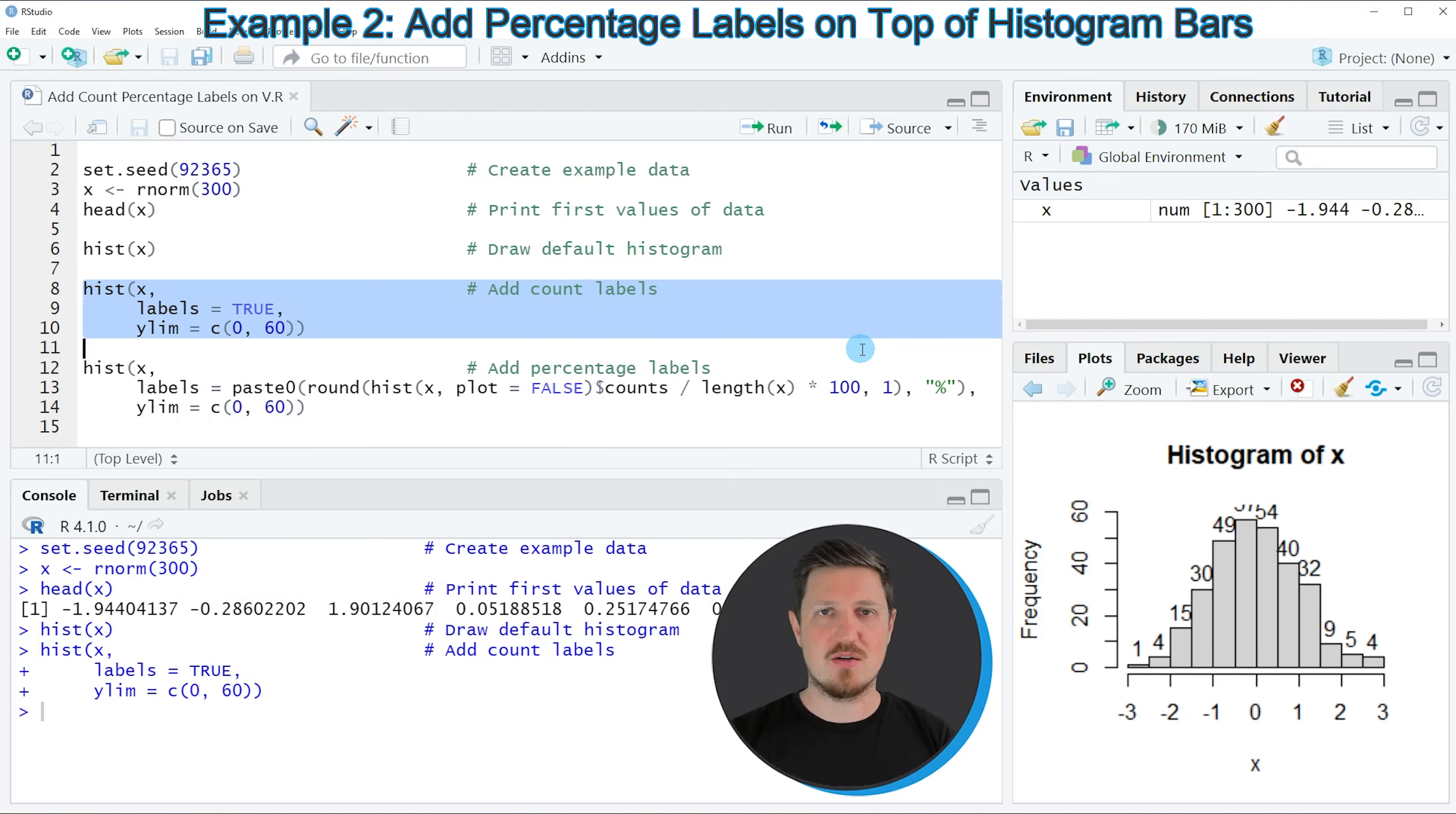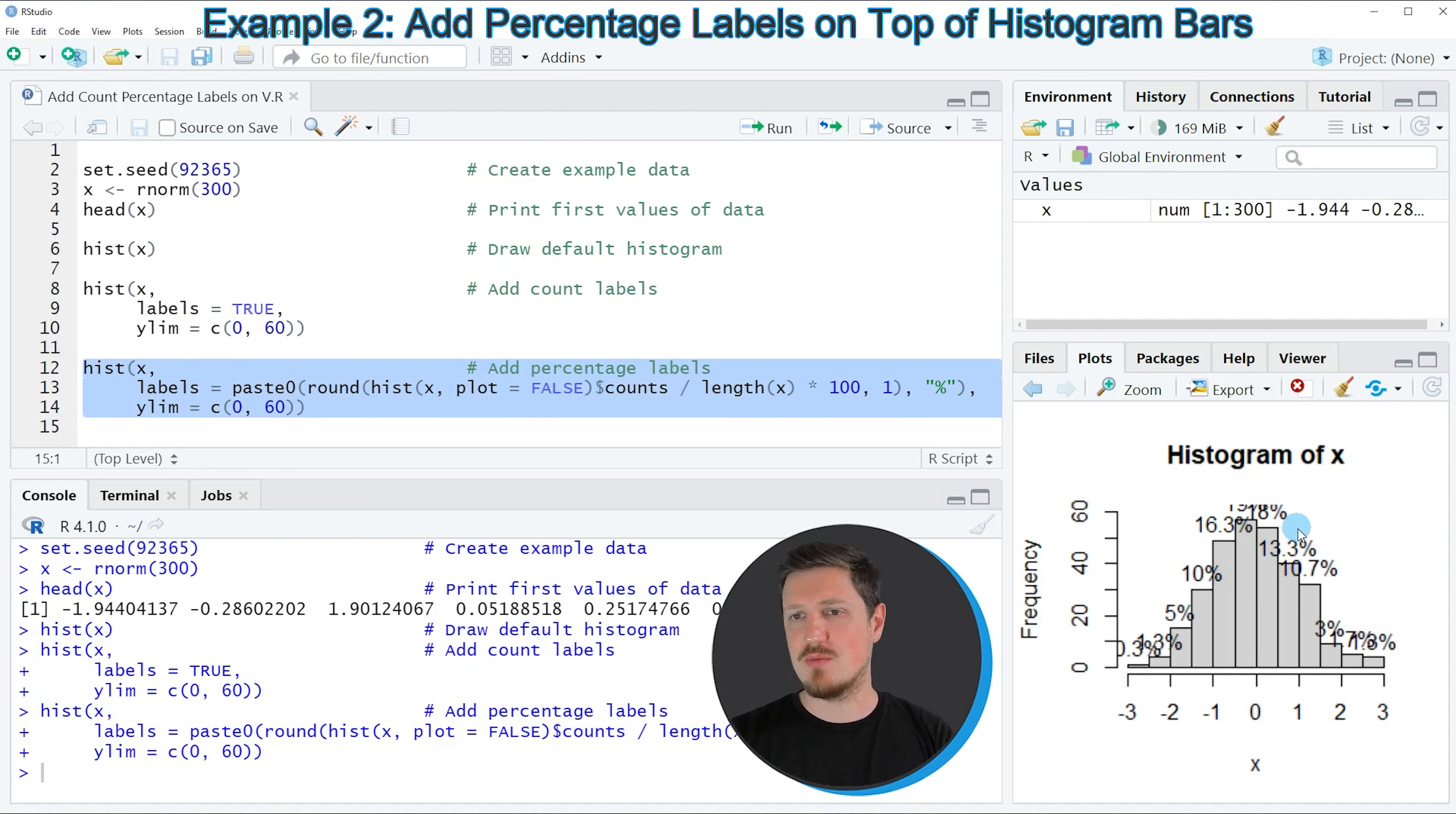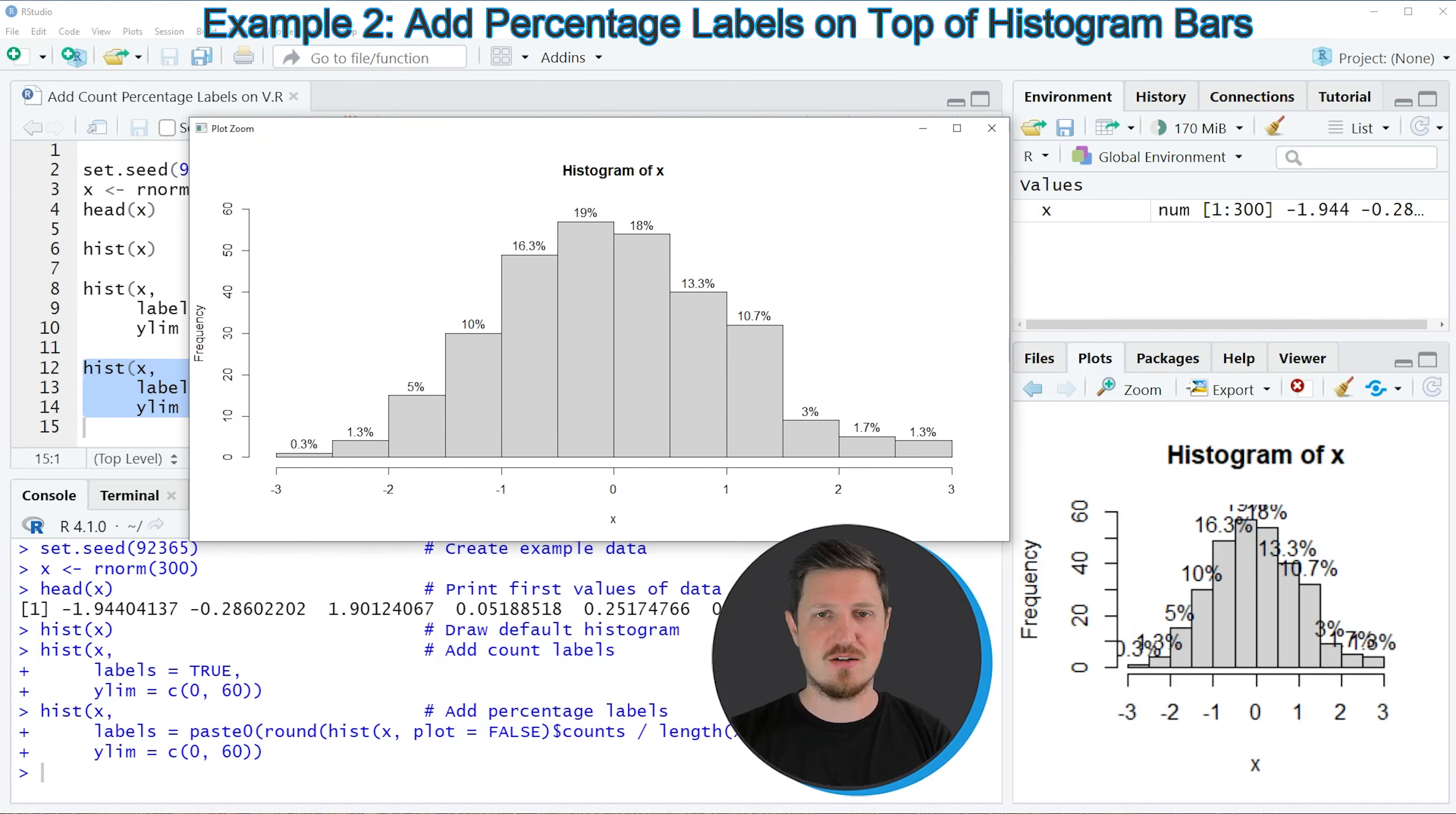We can also add percentage labels on top of the bars and this is what I want to show you in the next part of the tutorial starting in line 12 of the code. In these lines of code I'm again using the hist function and I'm applying the hist function to our numeric vector and then I'm specifying the labels argument to this formula that you can see in line 13. I will put the code of this tutorial into the description of the video so you can just copy paste it from there in case you want to replicate this example. And then again I'm specifying the ylim argument to be equal to a larger range to increase the space for the labels. So if you run lines 12 to 14 of the code another histogram is created at the bottom right and we can enlarge this histogram by clicking on the zoom button and then you can see that we have created another histogram which is showing the percentage points on top of each bar.